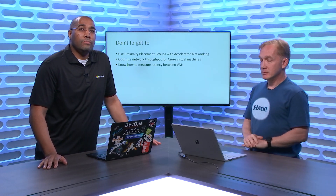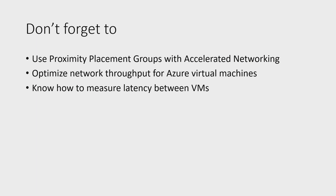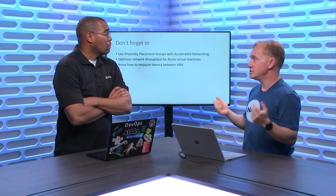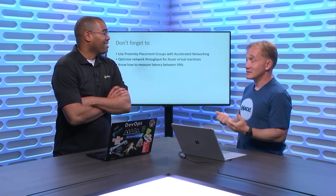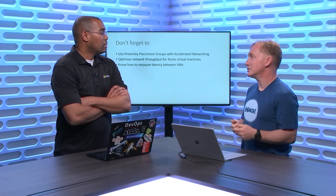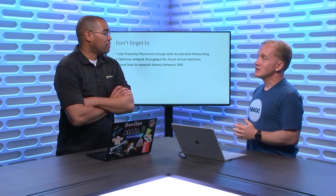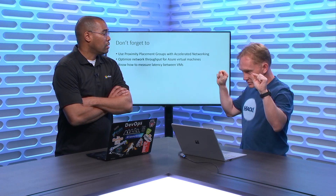A few more tips: always make sure you're using accelerated networking if latency is an issue — today it's the default for almost all VM sizes. There is documentation on how to optimize network throughput for Azure virtual machines. If you're looking for latency, use the documented latency measurement tool. Don't try to copy 100 GB of data to test latency — you're actually testing throughput and bandwidth, not latency. Make sure you're measuring latency specifically.